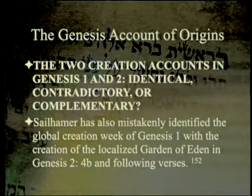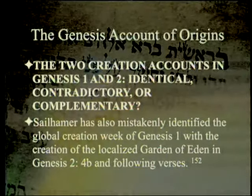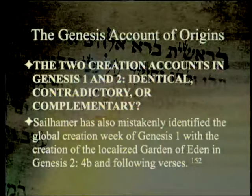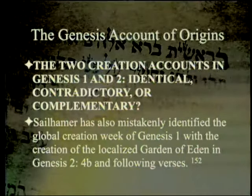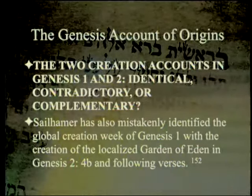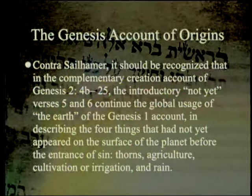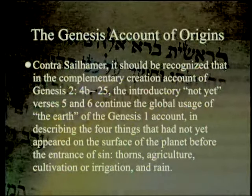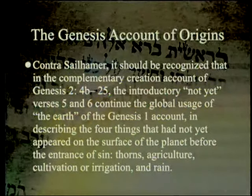Davidson starts out by saying that Sailhammer has mistakenly identified the global creation week of Genesis 1 with the creation of the localized Garden of Eden in Genesis 2:4b and following. Contra Sailhammer, it should be recognized that in the Complementary Creation Account of Genesis 2:4b through 25, the introductory 'not yet' verses 5 and 6 continue the global usage of the Earth from the Genesis 1 account.